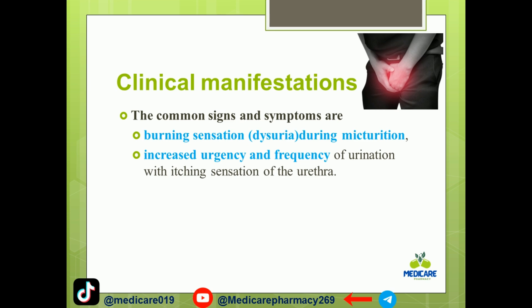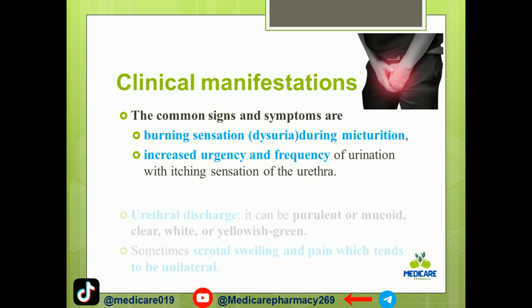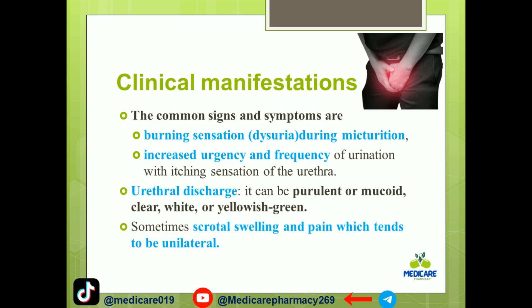Urethral discharge can be purulent or clear, white, or yellowish-green in color. There may also be associated social and psychological problems.